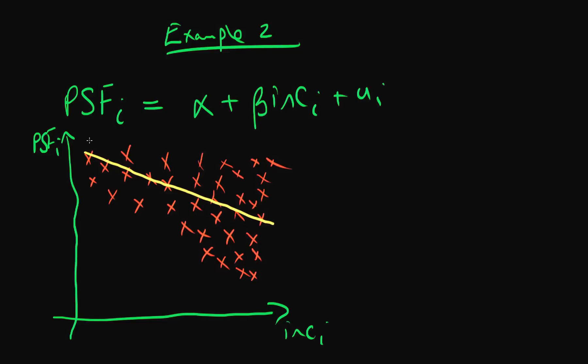But notice what's happened to the average distance of the points from a line as income increases. Well, if income is small, then the points don't tend to be very far away from our fitted line. Whereas as the level of income increases, the points tend to be increasingly further away on average from our line than they were if income was small.